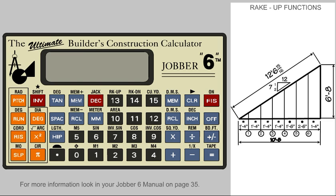This feature automatically solves the increasing length of the rise at designated spaces along the horizontal base of a right triangle. It is ideal for calculating the various stud lengths in raked walls, also for calculating grade point elevations for any sloping project — from drain lines to surface grading, even sloping roof systems.